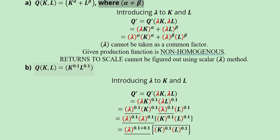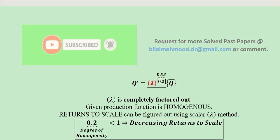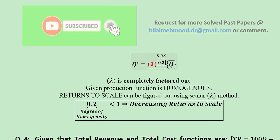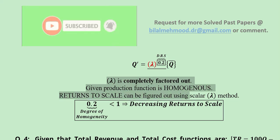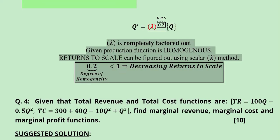The second production function has powers of 0.1 and 0.1 with a multiplication sign — a standard Cobb-Douglas production function. We apply the scalar method: introduce lambda, write it separately, then collect the lambdas and add their powers, getting 0.1 + 0.1 = 0.2 as the degree of homogeneity. Since 0.2 is less than one, this indicates decreasing returns to scale (DRS). Lambda is completely factored out, confirming it is a homogeneous production function with DRS.